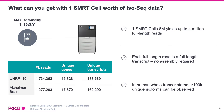A single SMRT cell on the Sequel II or IIe systems is sufficient to characterize a whole transcriptome, ranging from a few hundred bases to 10 kilobases or longer. We have released two public human transcriptome datasets — the Universal Human Reference and an Alzheimer's brain dataset. Both achieve more than 4 million full-length reads per SMRT cell, resulting in more than 16,000 unique genes or more than 160,000 unique transcript isoforms.